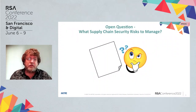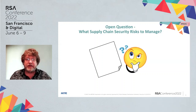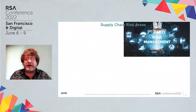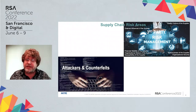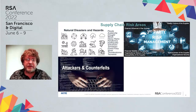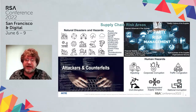One big question is, what should I be managing? What risks in the supply chain and the security of that supply chain should I be addressing? A lot of people think about third-party risks, but do they think about all the details? Do they think about attackers and counterfeits? Do they think about natural disasters and hazards of many types? How about human hazards?